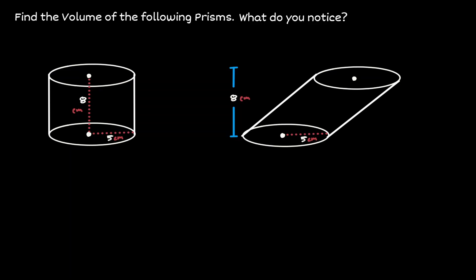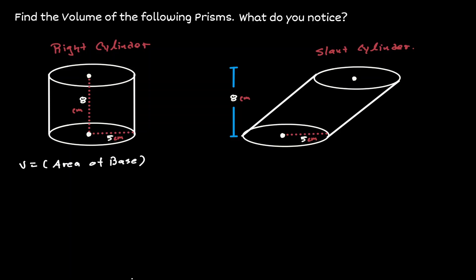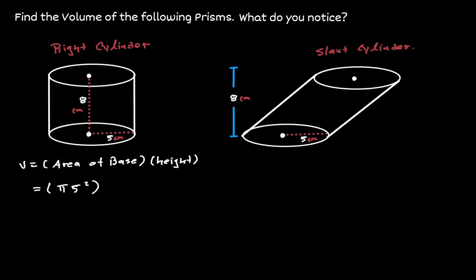Let's take a look at some examples. Let's consider these two cylinders — one cylinder that is straight, we call that a right cylinder, and a cylinder that is a little bit slanted. Let's find the volume for each of those cylinders. Remember that the volume is the area of the base times the height. So within our base, we have a radius of 5, so therefore the area is π times 5 squared. And for the height, that is equivalent to 8. 5 squared is 25, and 25 times 8 is 200, so we have a total of 200π.